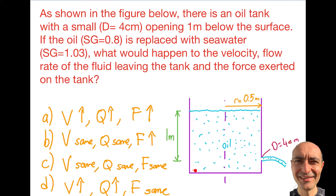I have myself a nice oil tank. The dimension over here is given as half a meter, and what I do is I have an opening one meter from the top surface — and you can see it's a fairly small opening. So the oil is leaking from here and going out. My question is: if the oil — and I gave you the specific gravity of oil — is replaced with seawater, I'm reconditioning this tank and I'm going to store seawater in it. I gave you the specific gravity, which is heavier. So my question is: what will happen to the velocity over here?